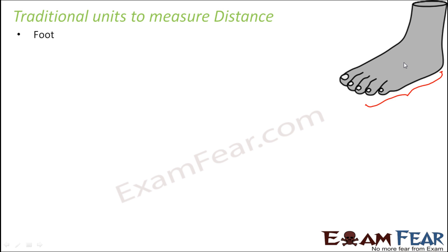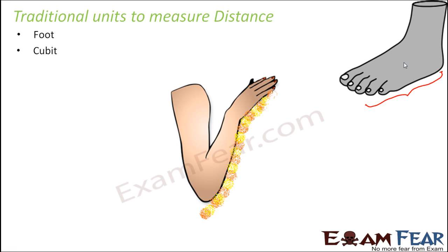So let's say they have to measure the length of a room. What they would do is just step across and measure with their own foot, and let's say it is 10 feet. That's how they would measure. Foot length was one very common traditional unit. In fact, today also we often tell our height in feet, like 'he is 6 feet tall' or 'she is 5 feet tall.' That is the same foot we are referring to.